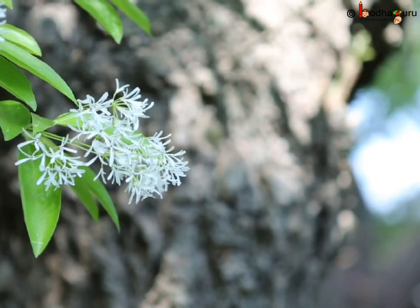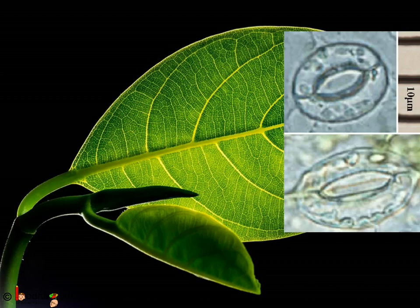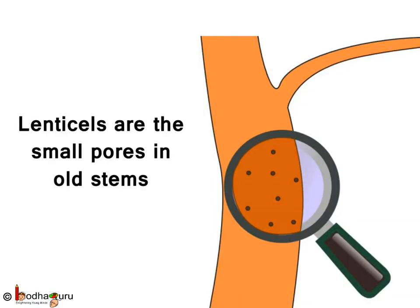We already know there are tiny pores present on the surface of leaves where massive amounts of gaseous exchange takes place. These are stomata. There are also many raised pores in the stems of woody plants — these are called lenticels.